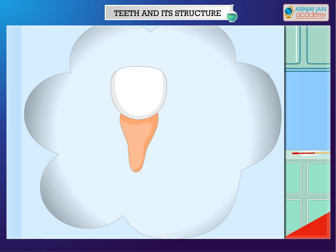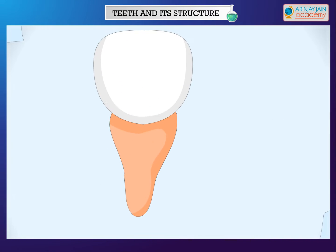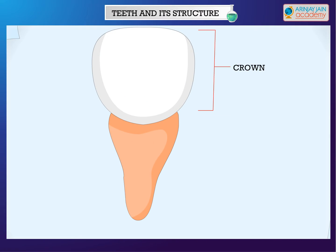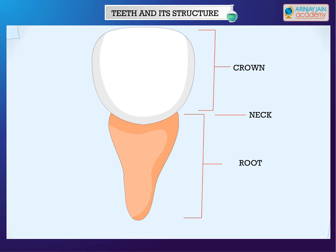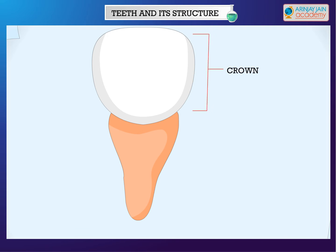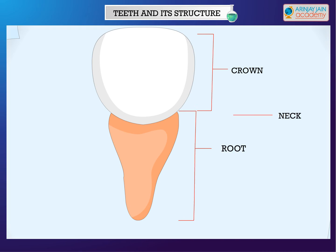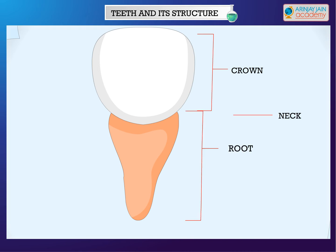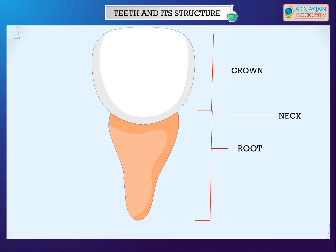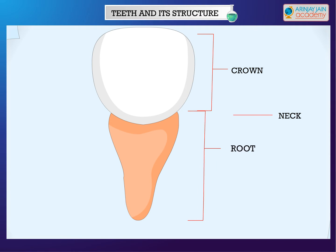A tooth has three main parts: crown, neck, and root. The crown is the visible part of the tooth. The neck lies below the crown. The root is the part of the tooth inside the gum, and it holds the tooth in its place.